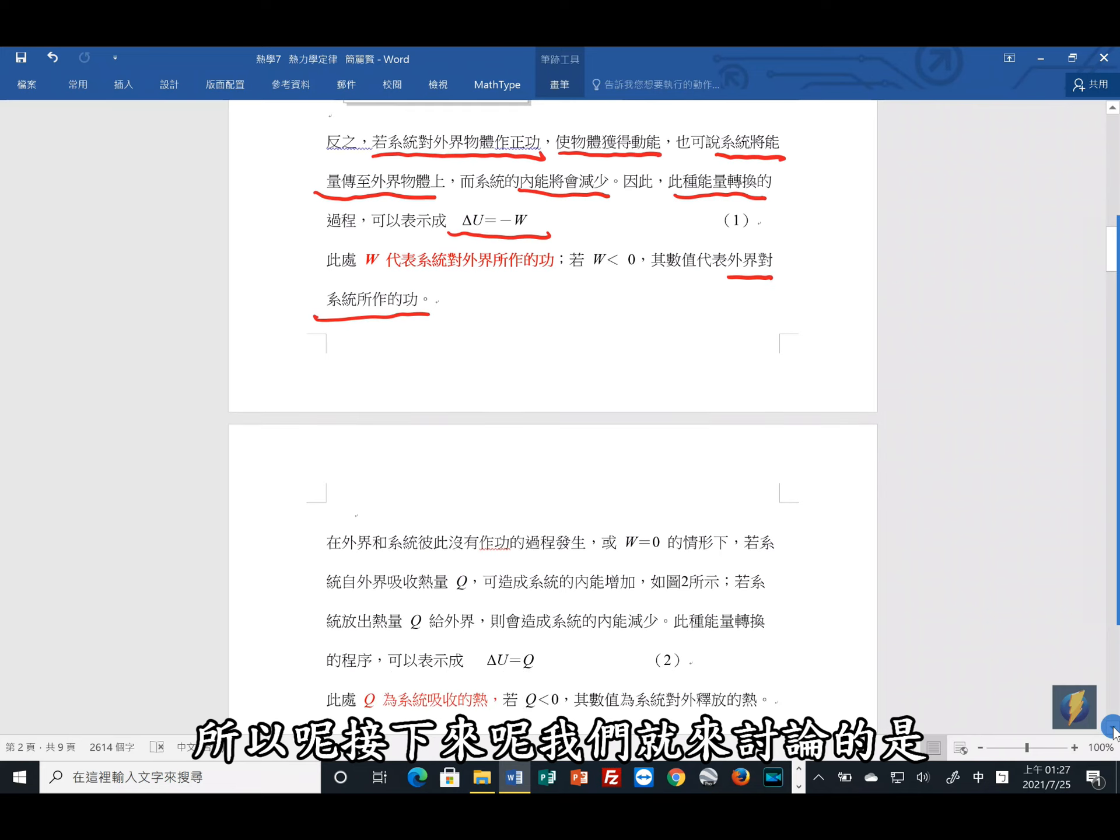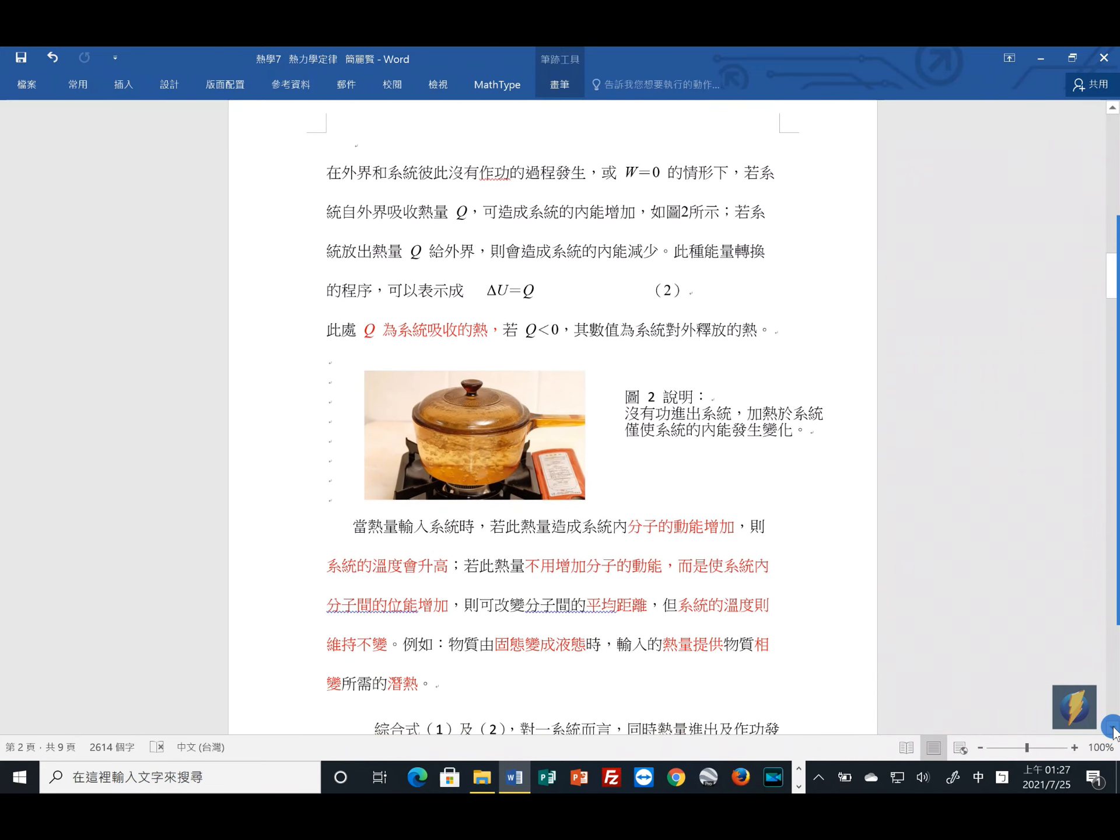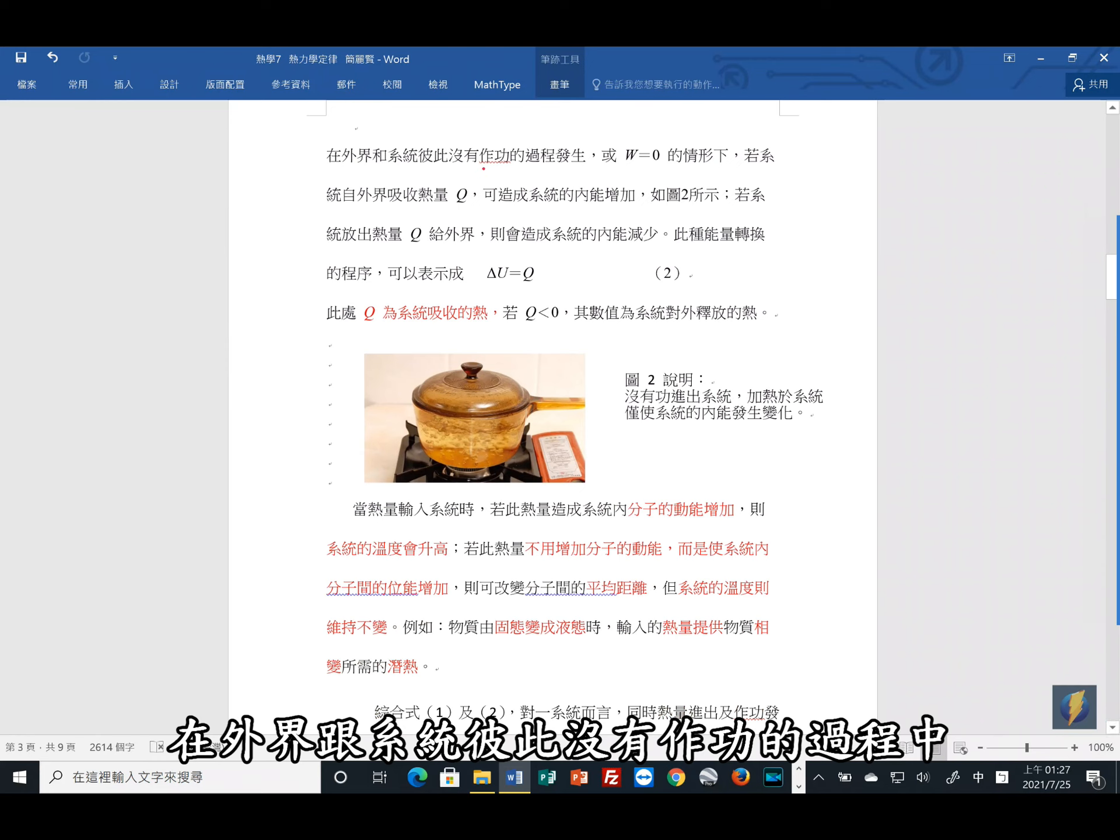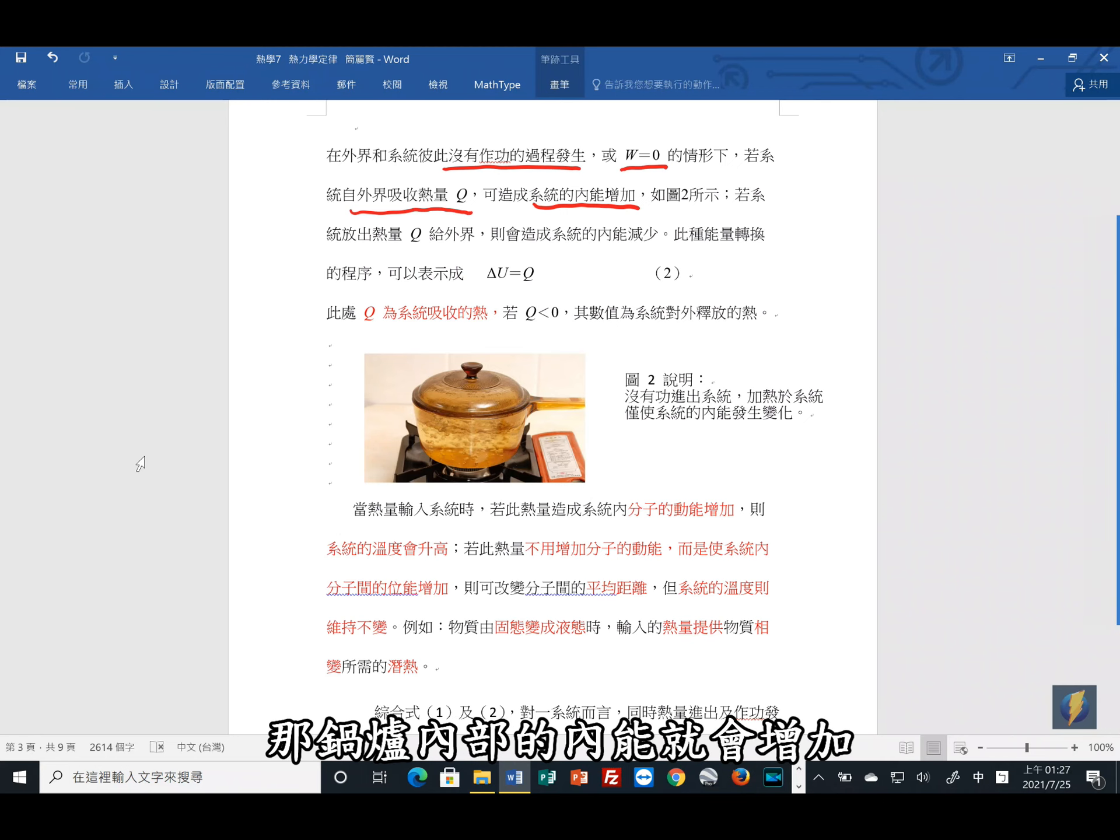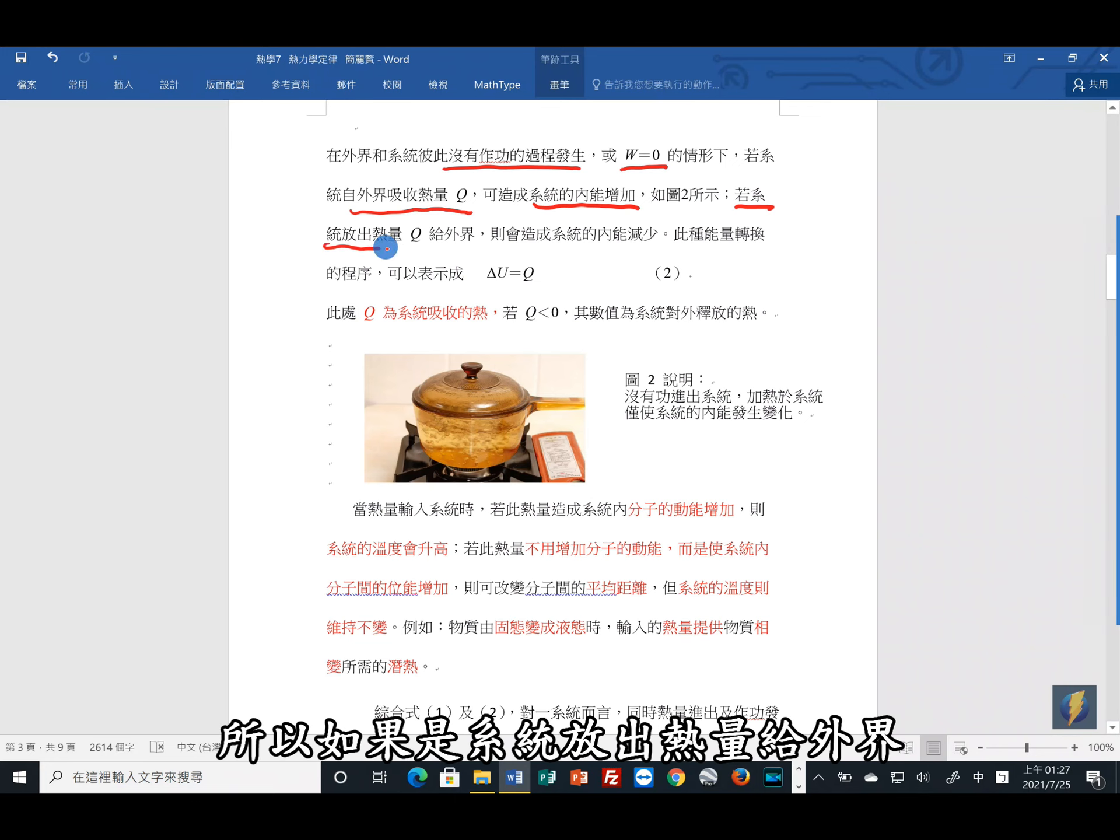接下来我们就来讨论的是,在外界跟系统彼此没有做功的过程中,那功是零,则系统如果从外界吸收的热量,例如说火源,那么系统内能也会增加。所以我们可以看到这一张图,这个是锅子。当锅子是外界瓦斯炉加热,则锅炉内部就是一个系统,那锅炉内部的内能就会增加。